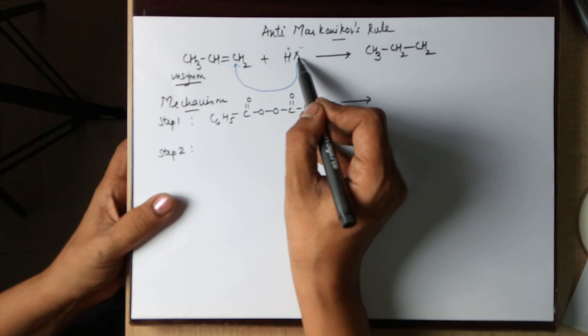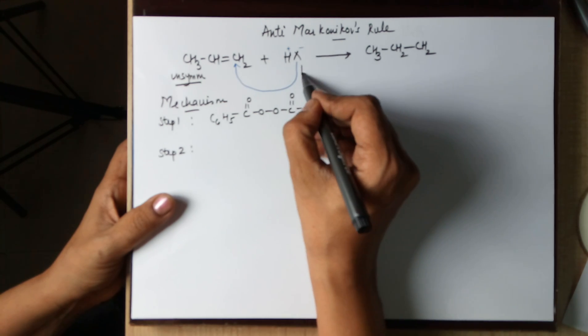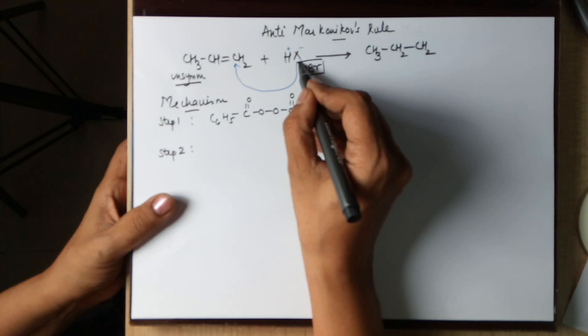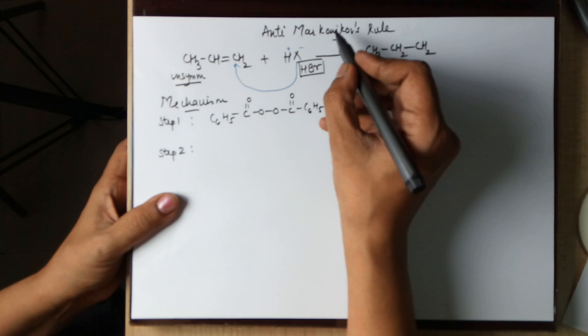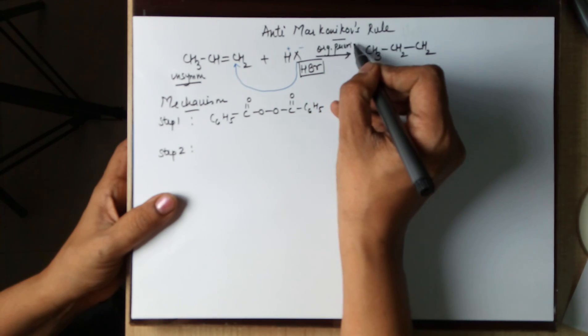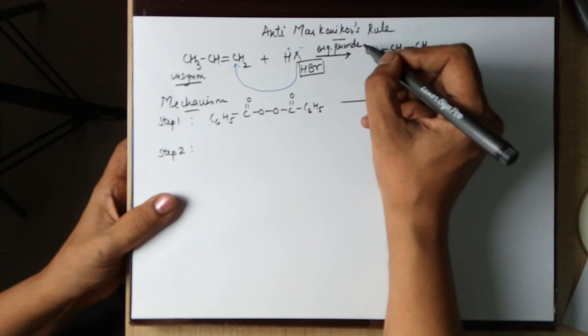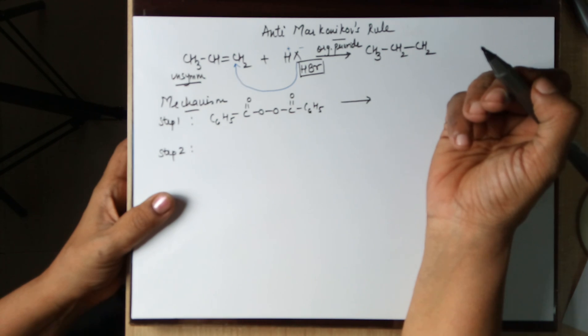Adding on an identity. Now this time you cannot write an HX. You will have to write an HBr because this rule is only applicable to HBr. On top of it you need to mention organic peroxide in here which is the reason why this reaction goes anti-Markovnikov's rule.